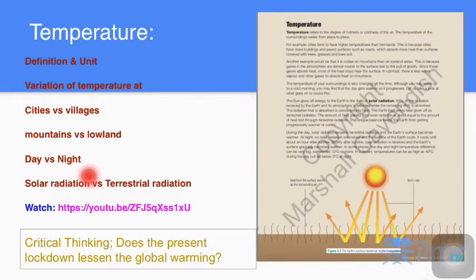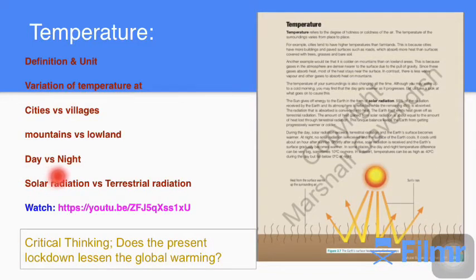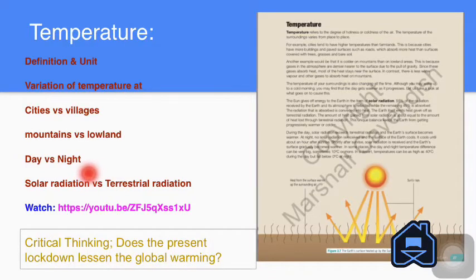It cools until about an hour after sunrise. Shortly after sunrise, solar radiation is received and the surface of the Earth gradually becomes warmer. In some places the day and night temperature difference can be very big, sometimes 10 degrees Celsius or more. In the desert for example, the day temperature can be as high as 40 degrees Celsius but at night it falls below zero degrees Celsius.